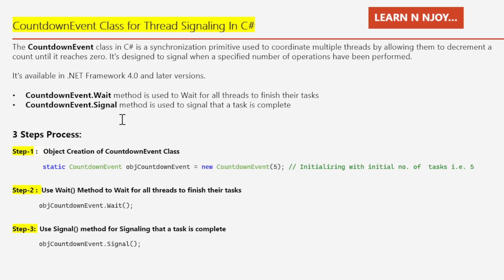Here's a quick three-step process to leverage CountdownEvent for thread coordination. Step one — object creation: create an instance of CountdownEvent initialized with the total number of tasks, e.g., `new CountdownEvent(5)`. Step two — waiting for completion: call `objCountdownEvent.Wait()` to pause execution until all threads finish. Step three — signaling task completion: call `objCountdownEvent.Signal()` to track completed tasks. CountdownEvent is perfect for scenarios where a known number of tasks must complete before moving forward.